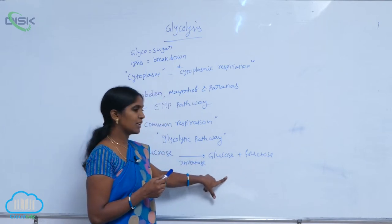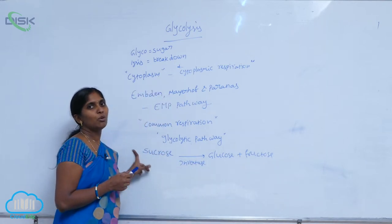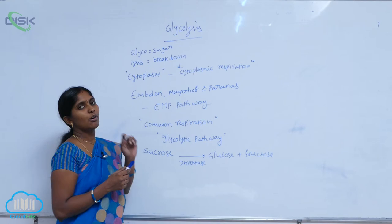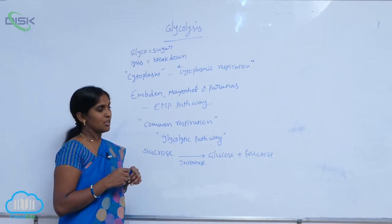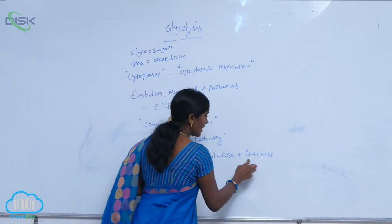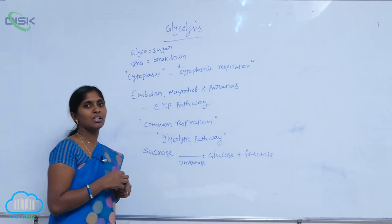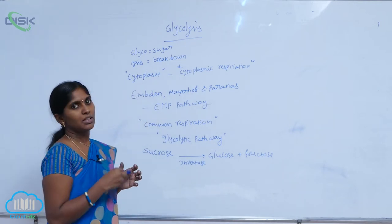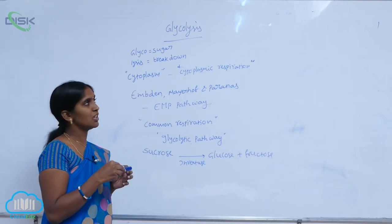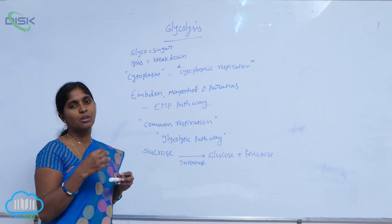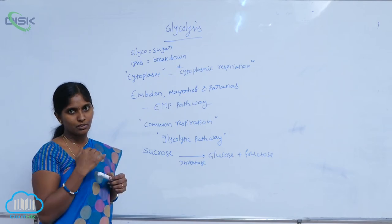These two monosaccharides are available as the source for glycolysis. Glucose as well as fructose, both are the first initiating substrates of the glycolysis metabolic pathway.